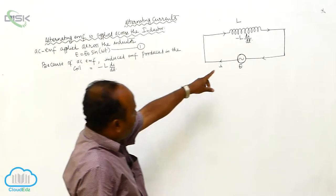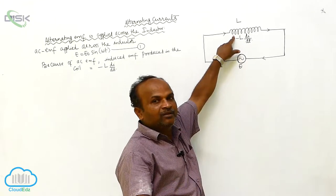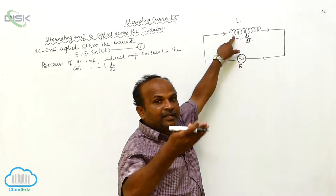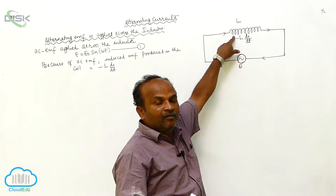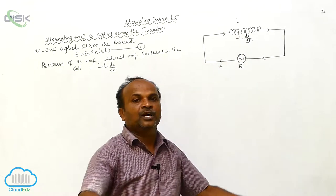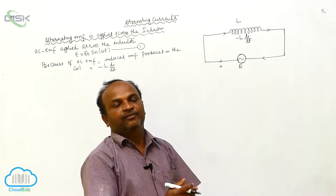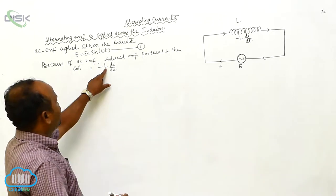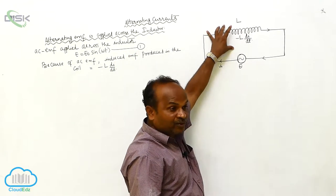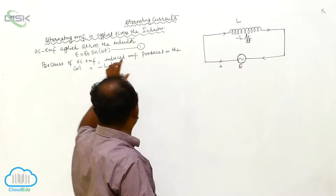Whenever AC current — that is, variable current — is passing through the coil, a variable magnetic field is produced within the coil. Whenever the variable magnetic field is produced within the coil, that leads to the production of an induced EMF. The induced EMF in the coil is represented by minus L into dI/dt. Whatever induced EMF is produced in the coil, it is opposite to the original EMF, that's why we put the minus sign.